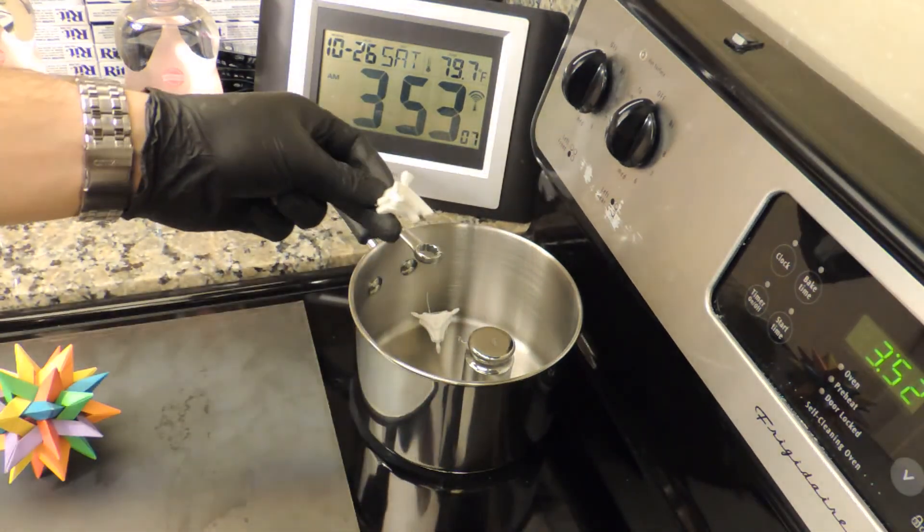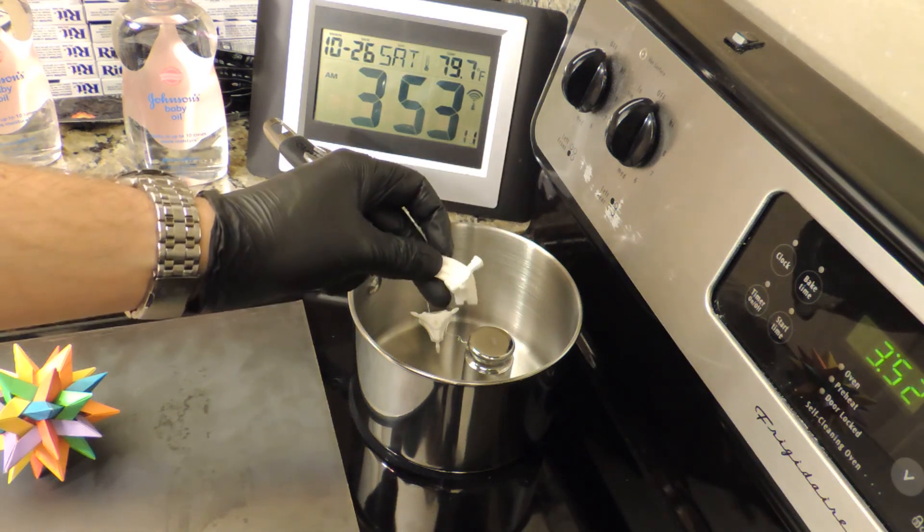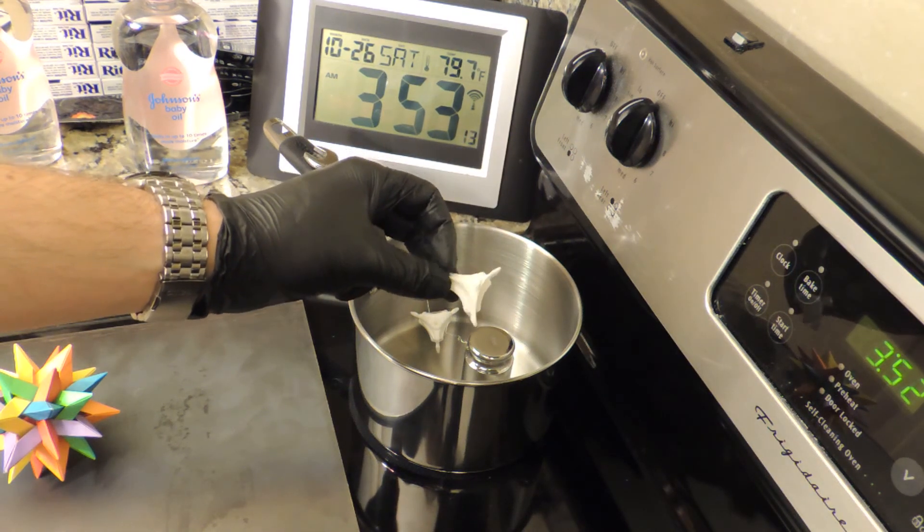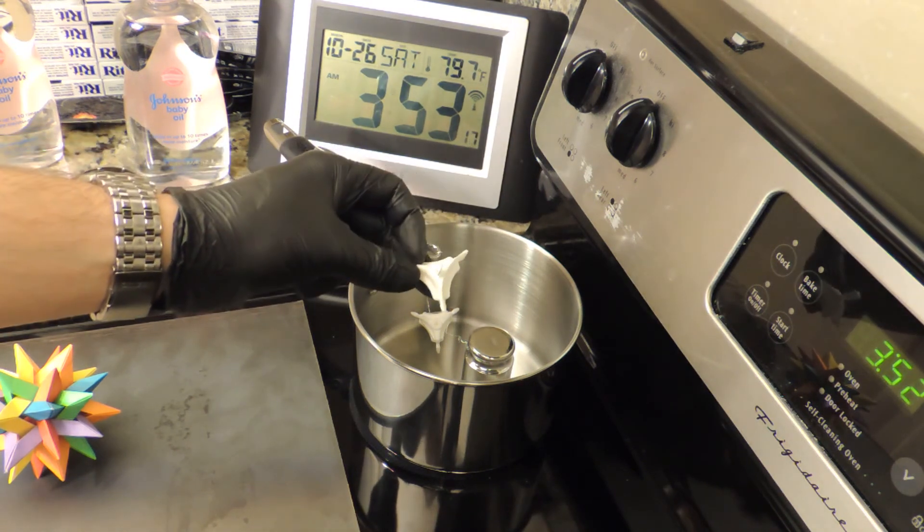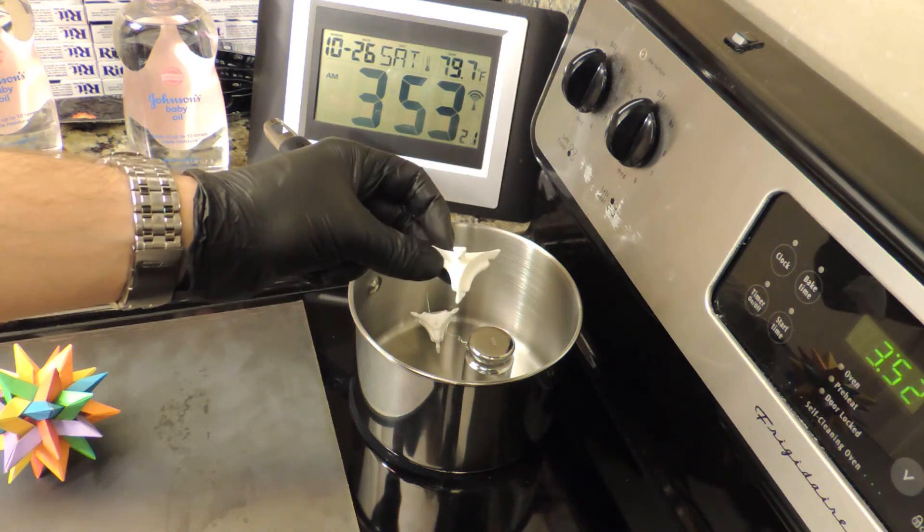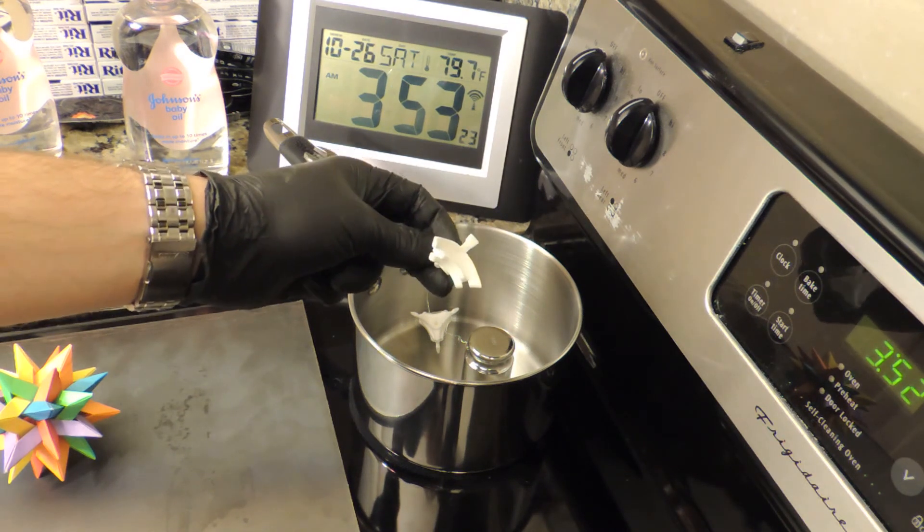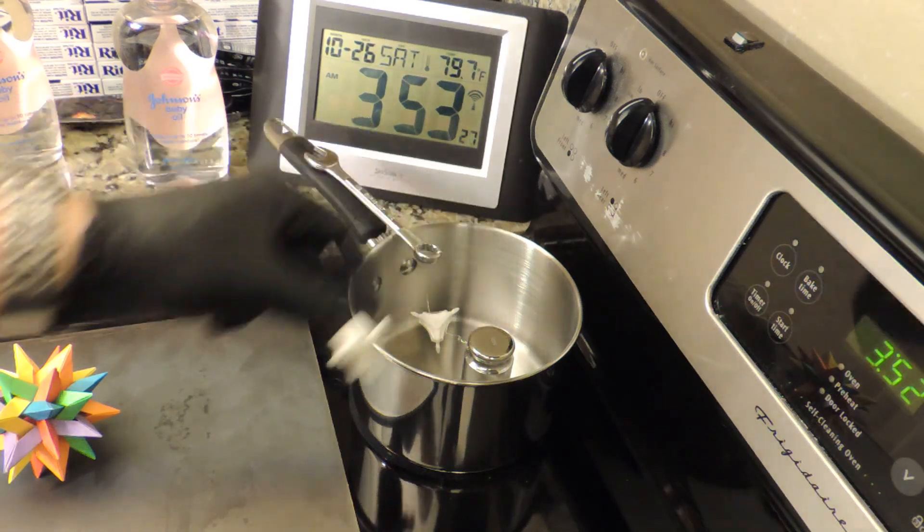So you see ranges published online that range from like 200 degrees Celsius to around like 350 degrees Celsius, which is a pretty huge range. So I'm going to try to figure out what the melting temperature is for it because later I'm going to try to figure out how to dye this stuff and temperature may matter.